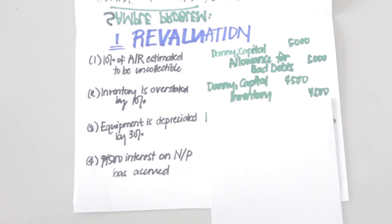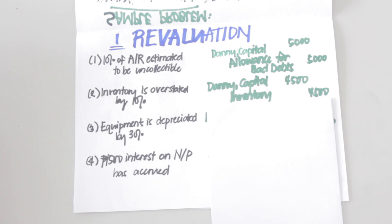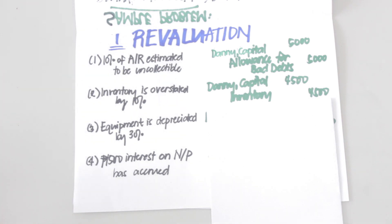Next, inventory is overstated by 10%, meaning the current balance is 110% of the actual balance. To get the actual balance, divide the stated amount by 1.1. Inventory is 49,500 divided by 1.1, giving us 45,000. Ten percent of 45,000 is 4,500, which is the amount of the adjustment. We debit Danny capital and credit inventory for 4,500.